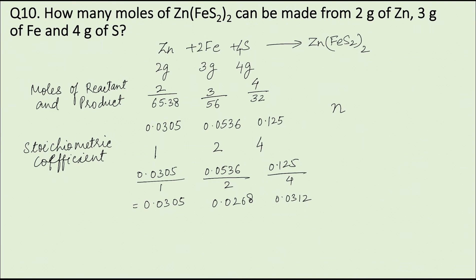For Zn(FeS₂)₂ the number of moles is N and the stoichiometric coefficient is 1, so it will be N/1. The ratio of moles to stoichiometric coefficient is least for iron. Therefore, iron is the limiting reagent.